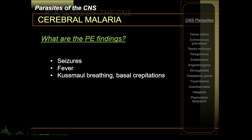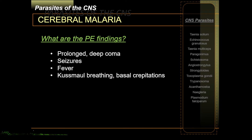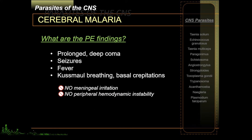What are the PE findings in cerebral malaria? A lot of patients manifest with seizures. Fever is very common, as it is generally common in malaria. Due to metabolic and lactic acidosis, you have Kussmaul breathing and basal crepitations. The most important neurologic finding is a prolonged, deep, coma-like state. Surprisingly, cerebral malaria normally does not present with meningeal irritation. Usually patients are normotensive or slightly hypertensive — malaria generally causes anemia, but compensatory activity in the body normalizes blood pressure.